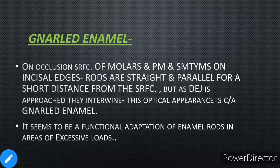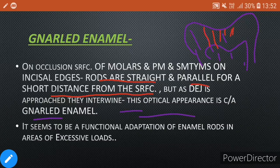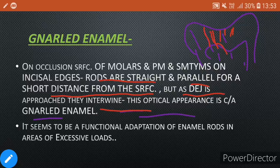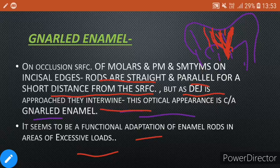First is gnarly enamel. Rods are straight and parallel for a short distance from the surface. When they come toward the DEJ (dentinoenamel junction), they interweave with each other. It seems to be a functional adaptation of enamel rods in areas of excessive loads — basically a way to adapt the enamel so that it can bear maximum masticatory loads.